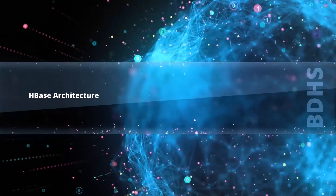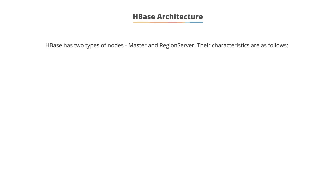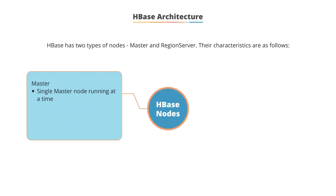HBase architecture. HBase has two types of nodes: master and region server. There is only one master node running at a time, whereas there can be one or more region servers. The high availability of the master node is maintained by ZooKeeper, a service for distributed systems. The master node manages cluster operations such as assignment, load balancing, and splitting. It is not a part of the read or write path of data.